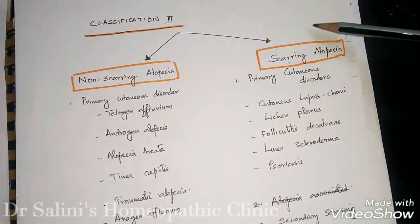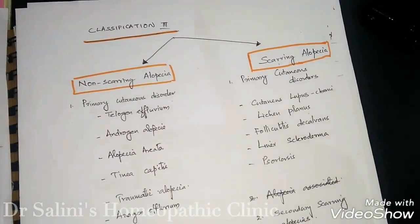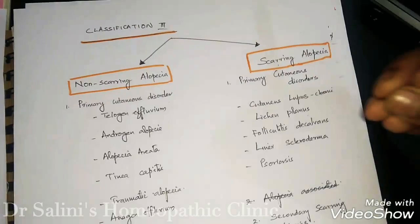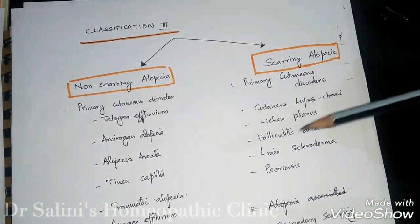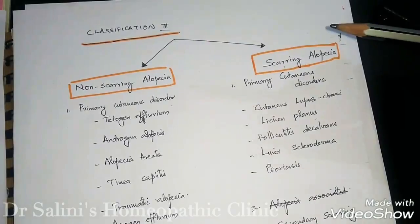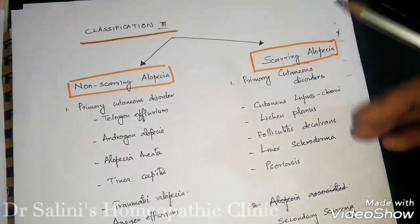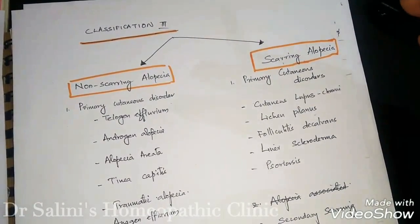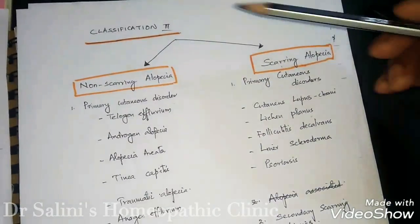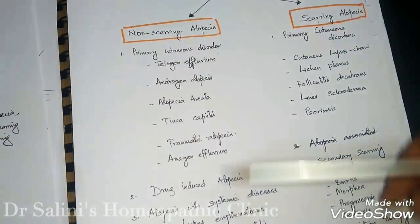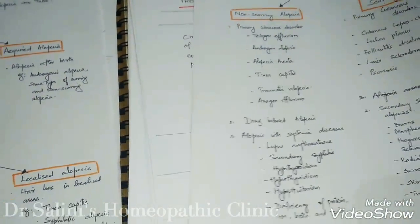The basic idea is that scarring alopecia has a very difficult chance of hair regrowth, since it causes scarring of the affected area. The whole dermal papillae gets affected and damaged, and once damaged — since the dermal papillae has the germ layer and stem cells needed for multiplication — it is difficult for hair to grow in that area. Non-scarring alopecia has more chances and a higher percentage of success.